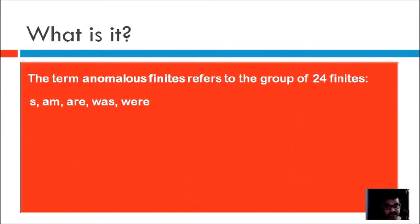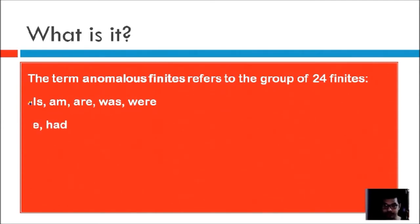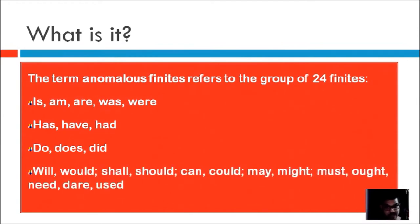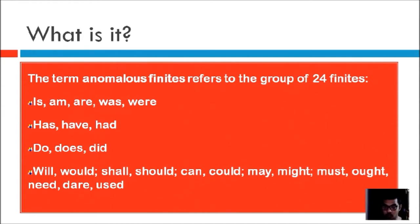What are they? They are the be verbs like is, am, are, was, were; also has, have, had; and also do, does, did. And there's a long list: will, would, shall, should, can, could, may, might, must, ought, need, did, used. This is the list of the 24 verbs which are termed as anomalous. You'll find both the present and past forms here.